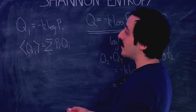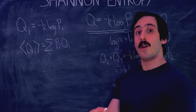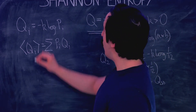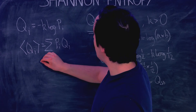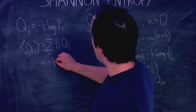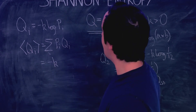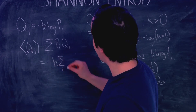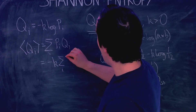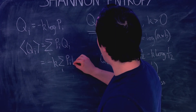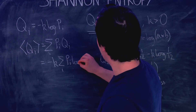This is just how expected values work. That sum equals minus K times the sum over i of P_i log P_i.